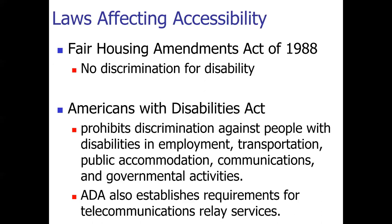If my apartment complex has three stories and the only available unit is on the third floor with concrete stairs, and someone says 'move somebody out of a first-floor apartment for me' — that is not a reasonable accommodation. What I can say is I'll put them on the list and contact them when a first-floor unit becomes available, but I can't kick somebody out just because they want a first-floor apartment. That happens a lot, especially with desirable apartments with great views.